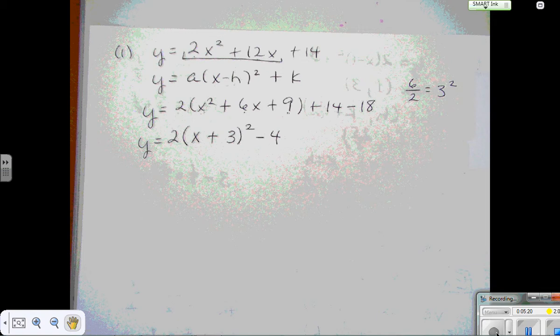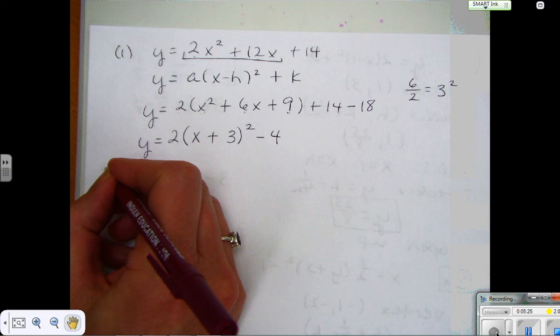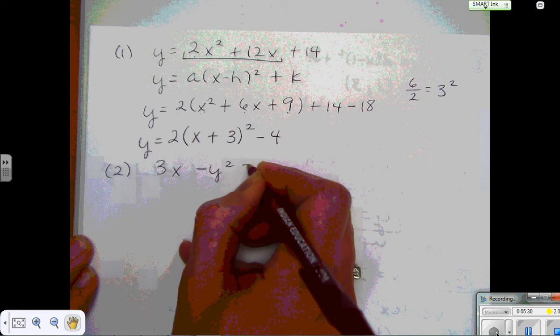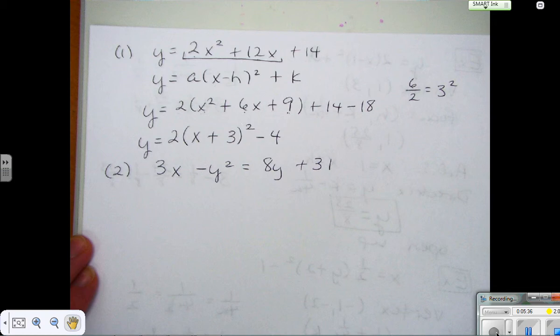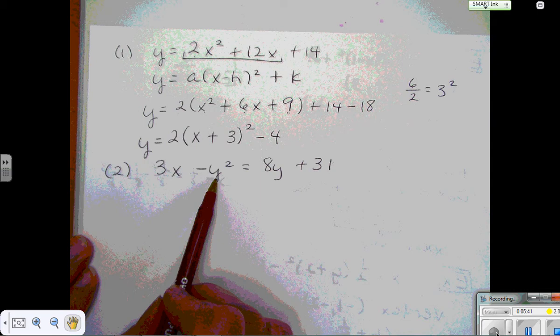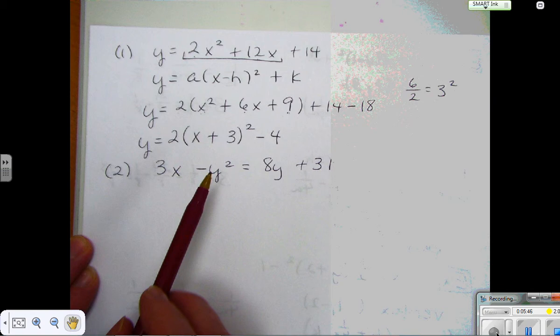Okay, so let's look at number 2. Number 2, 3x minus y squared equals 8y plus 31. So do you think this is going to be horizontal or vertical? Horizontal, because the y variable is the one that's squared. When it's vertical, your x variable is the one that's squared. Horizontal, y is squared.